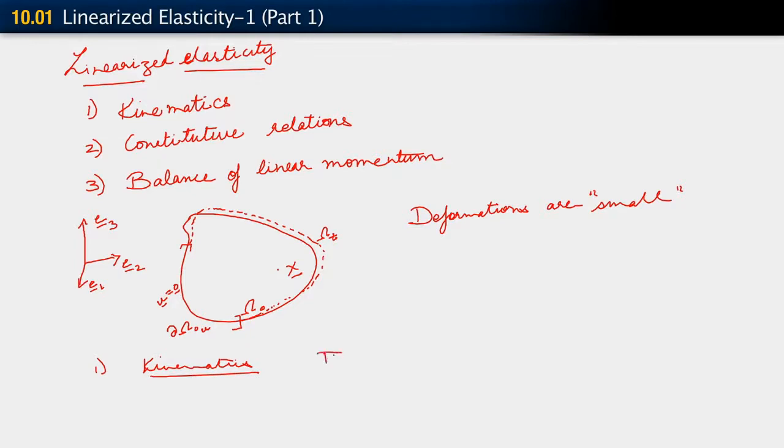As always, we have the deformation gradient F, which is partial of phi with respect to x. And just to make things clear what we are seeing here is that this little vector is u. That's our u field.